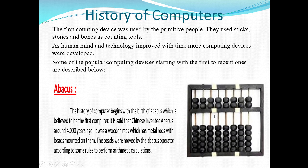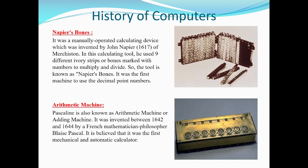The next device in the history of computers is Napier's Bones, invented by John Napier in the year 1617. Because of this invention, the device was named after him. It is a manually operated calculating device, and to perform calculations he used nine different ivory strips or bones marked with numbers, which were used not only for addition and subtraction but also for multiplication and division.